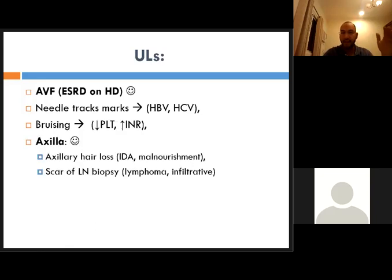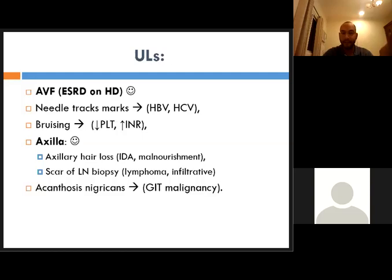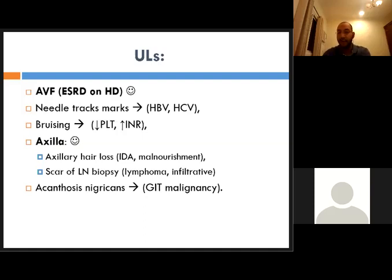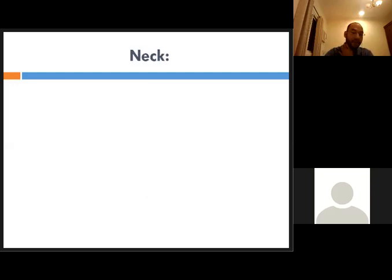Check the axillary hair for any loss. Search the axilla and neck for acanthosis nigricans, which has many differentials — especially hidden malignancy, insulin resistance, or obesity.